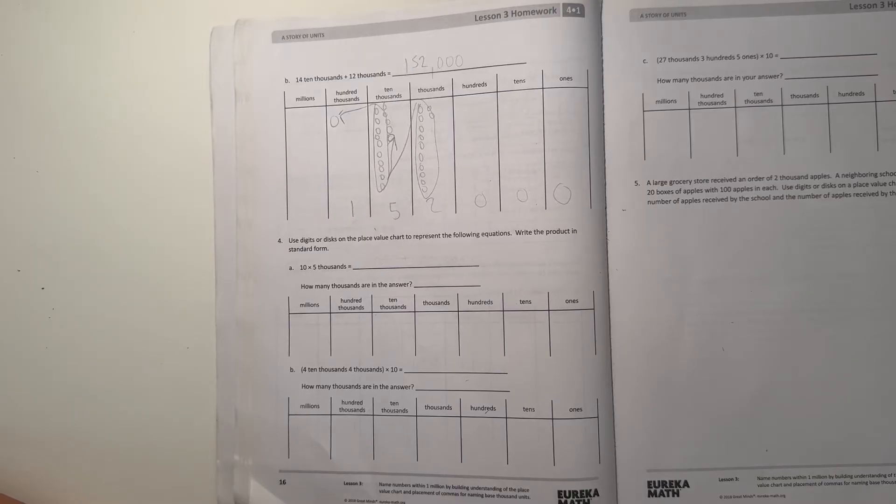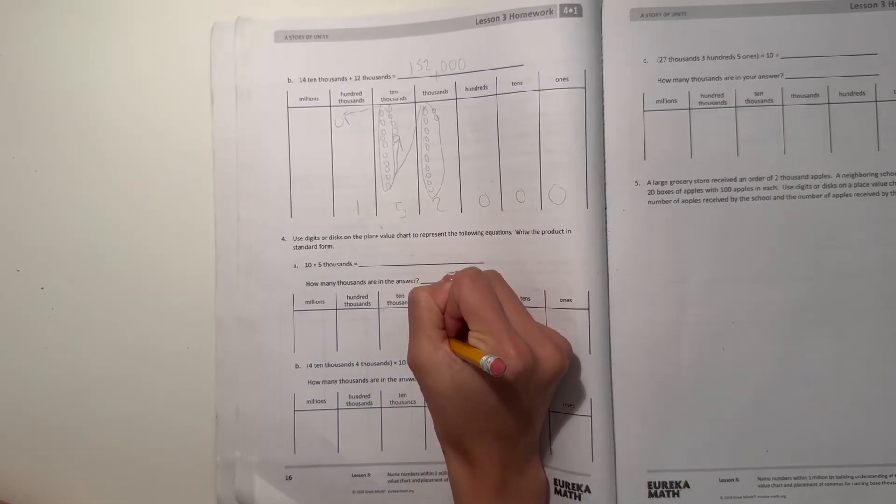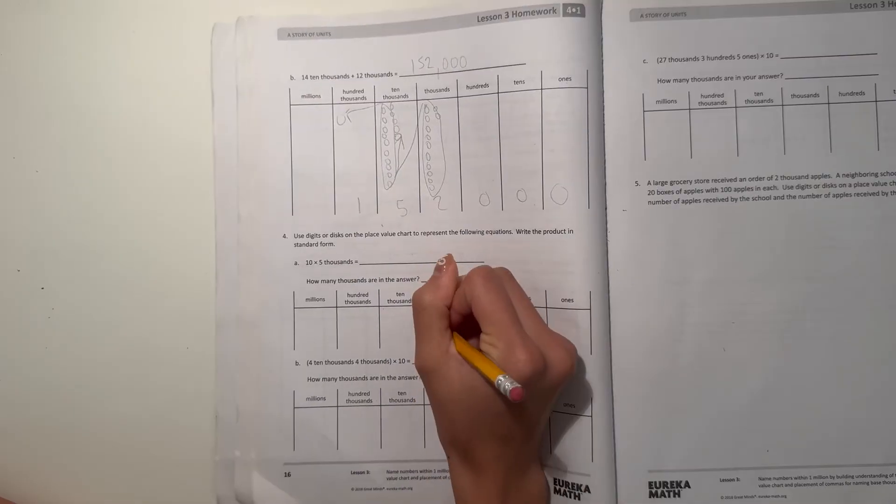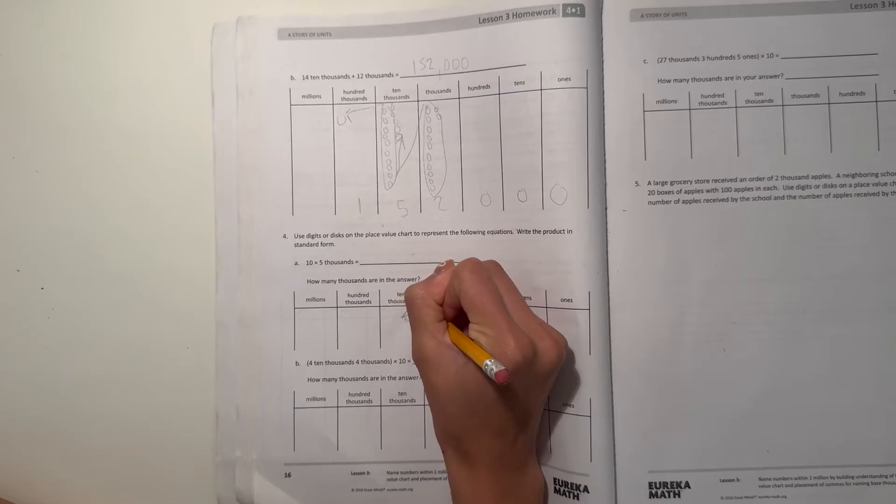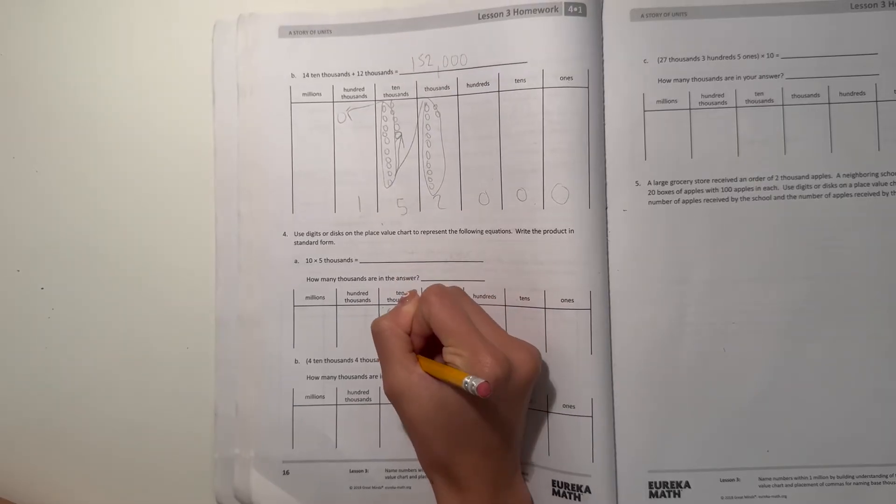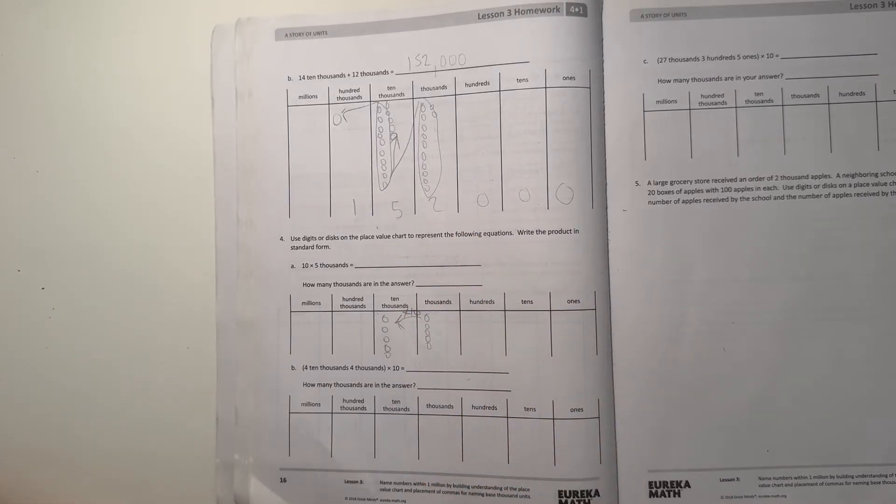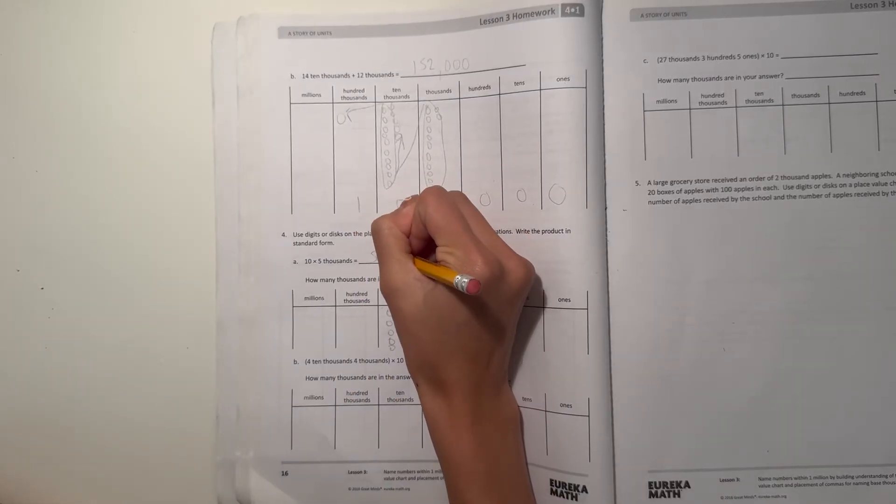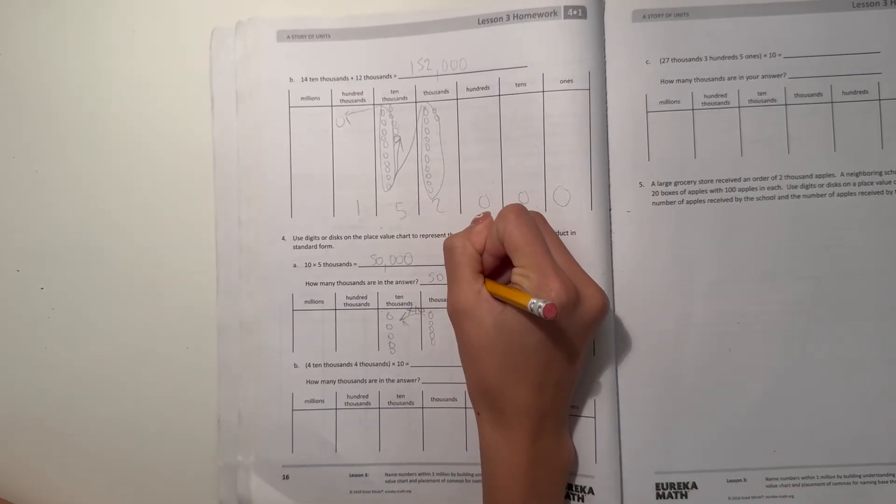All right, and now number 4. Use digits or disks on the place value chart to represent the following equations. Write the product in standard form. All right, so 10 times 5,000. So we have 5,000, and then times 10. So we're going to go and switch place values to the higher one up. So now we have 5,000, which is 50,000. So the answer is 50,000.